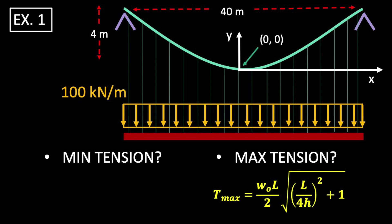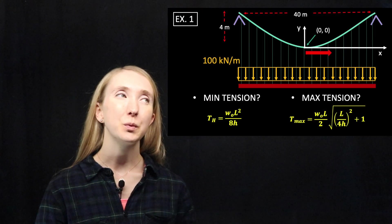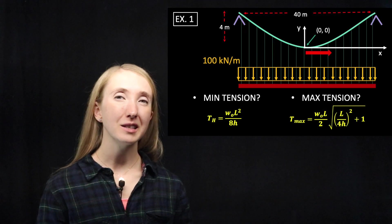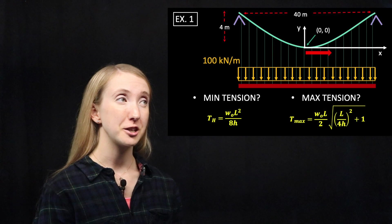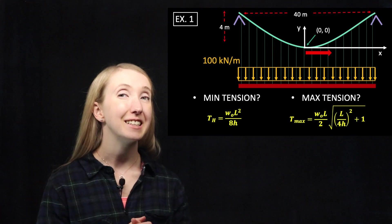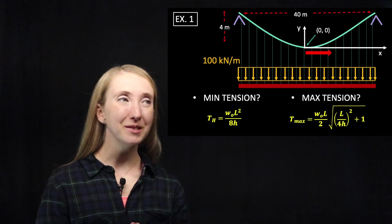What about the minimum? Well, if the tension increases as the slope increases, that means it must also be the lowest where we have our smallest slope. At our origin, we have a slope of zero, which means that our tension is acting solely in the horizontal direction. That means we can use this handy dandy formula to find our minimum tension.